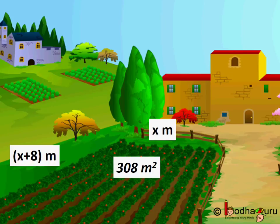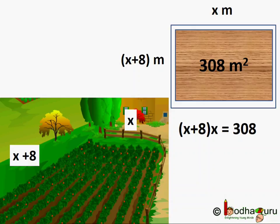In our previous lesson we took an example of a quadratic equation. Rajat has a rectangular land — its length is 8 meters more than its width and the area of the land is 308 square meters. We need to find the length and breadth of the land.